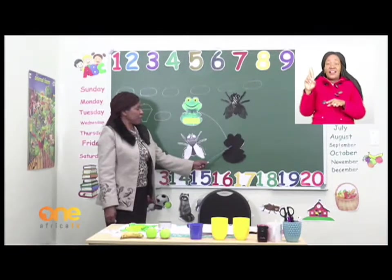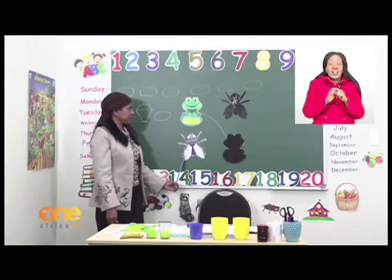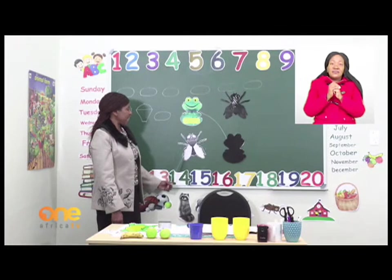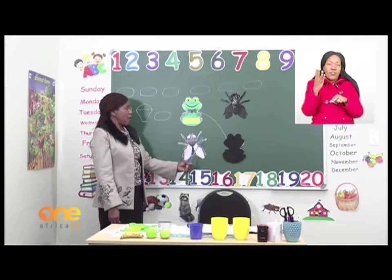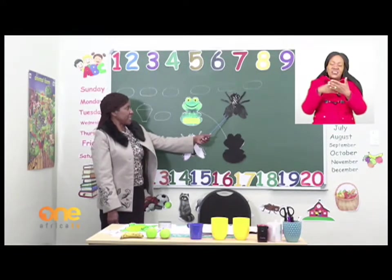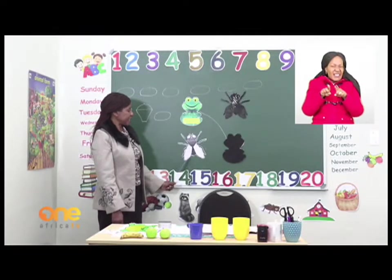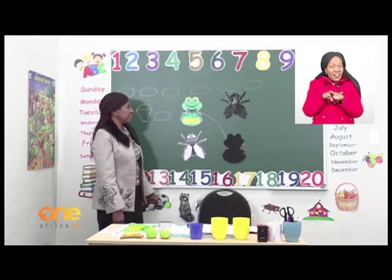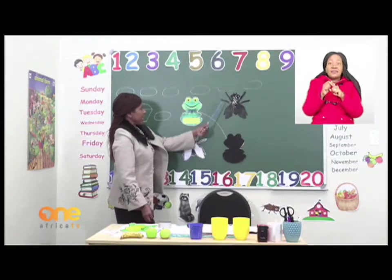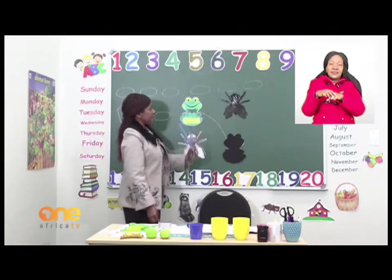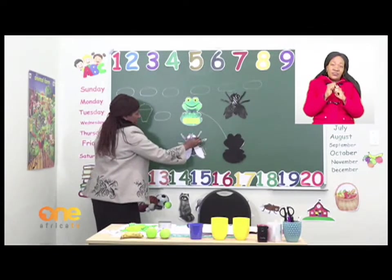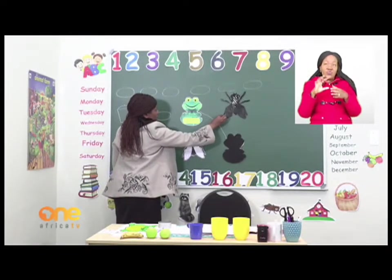Now let's look at the fly. A fly has two wings and six legs — let's count: one, two, three, four, five, six. Now look at the picture on the other side. I can see two wings, the legs, and the fly's head. The shadow of this fly should be the one on top. From the fly, we must draw a line to join it to its rightful shadow.